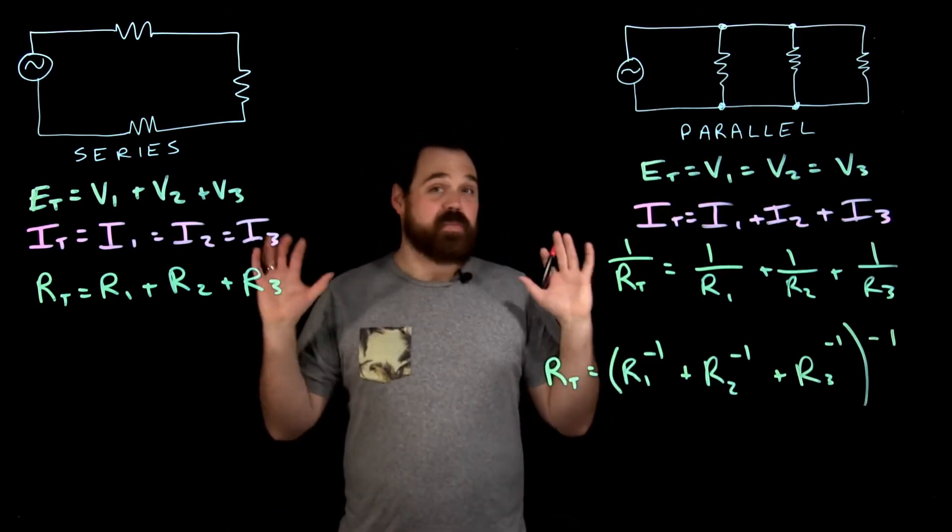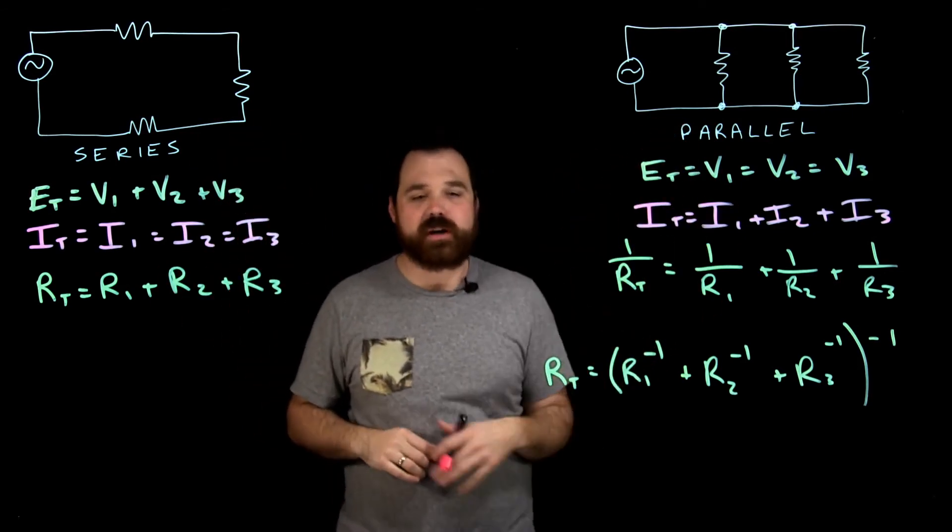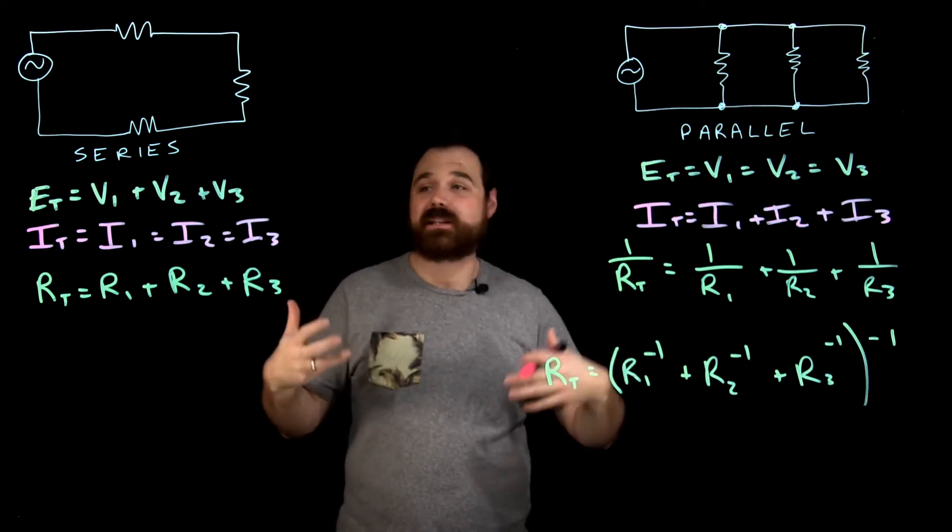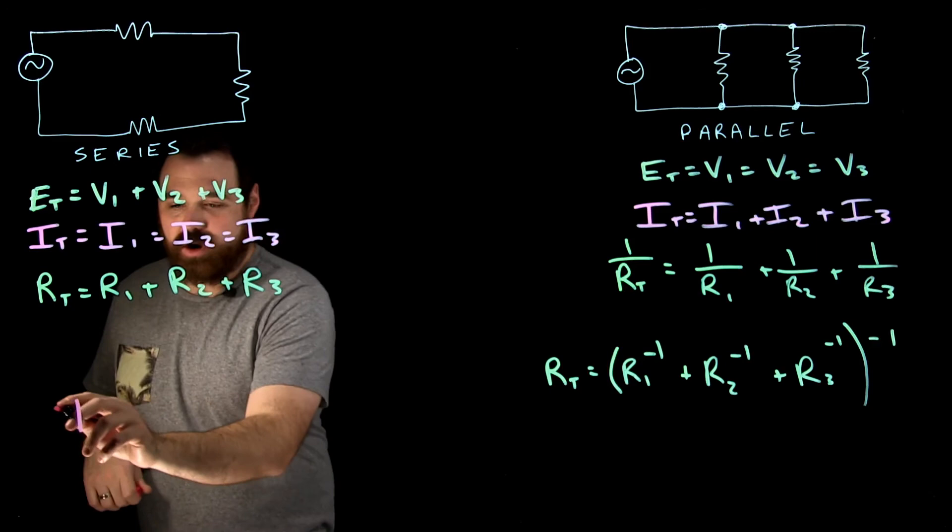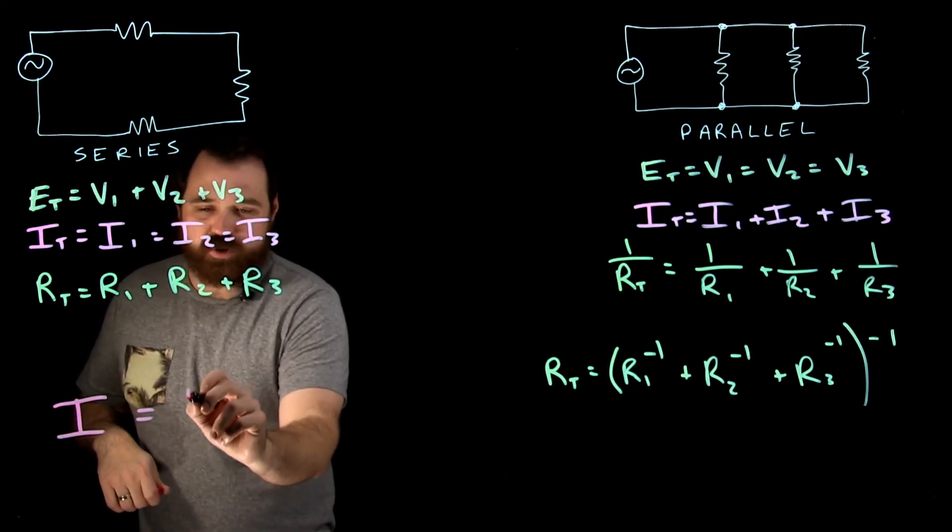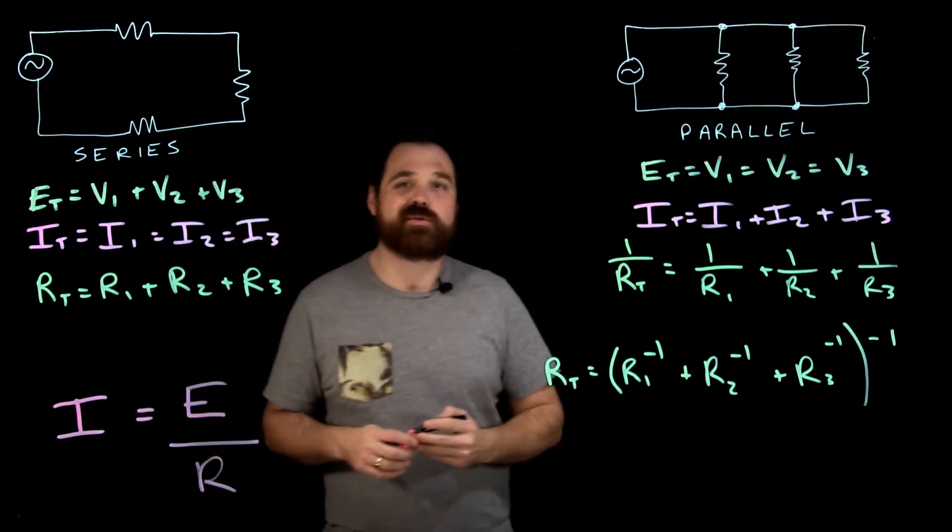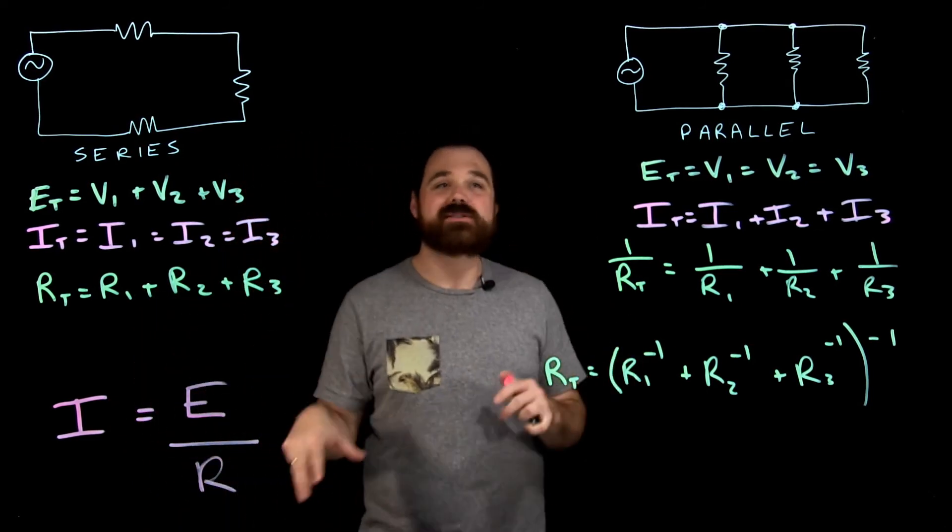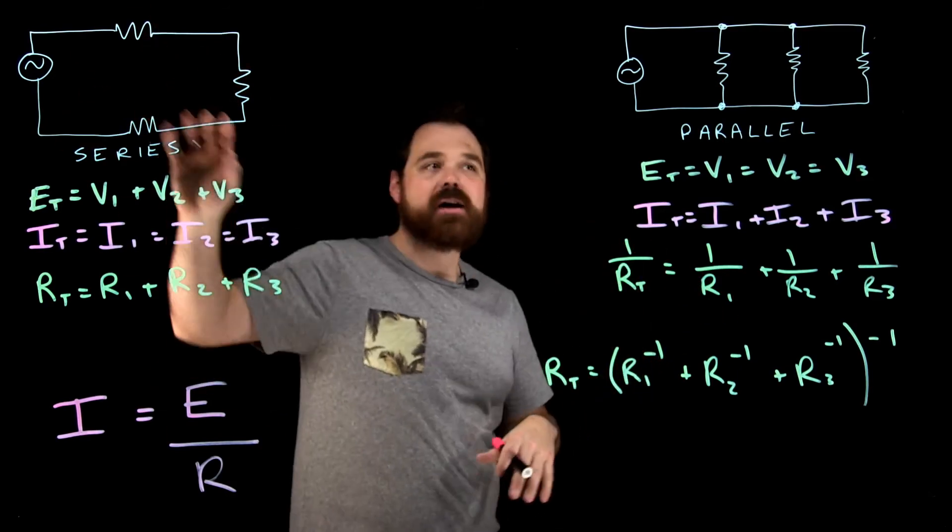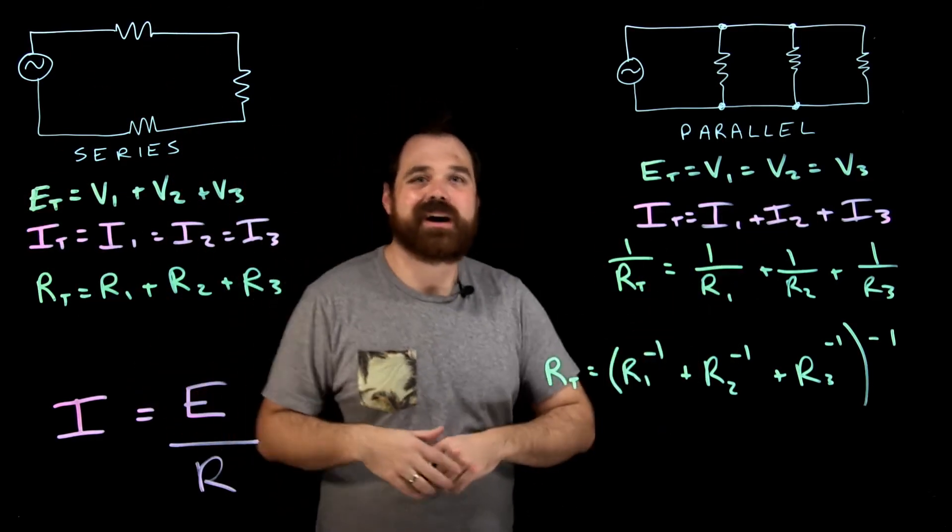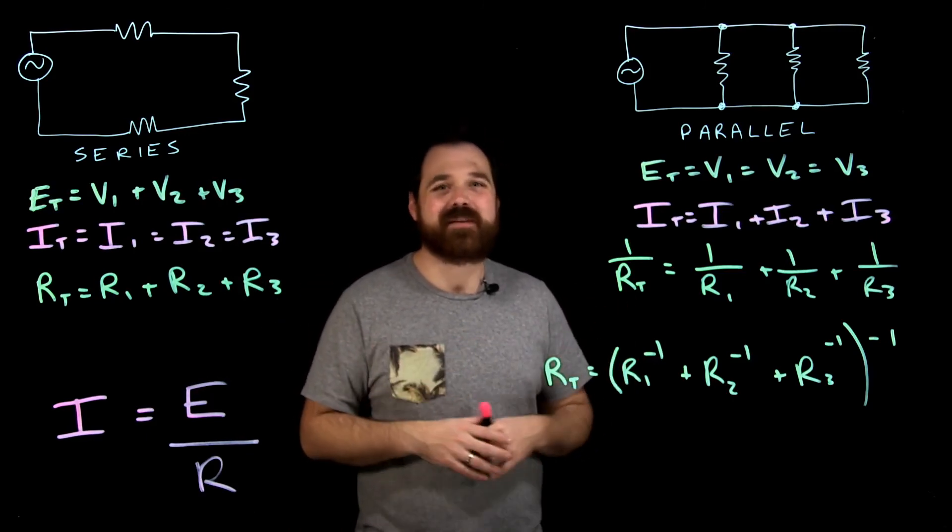Those are two basic formulas comparing purely resistive series and parallel circuits. Once we can calculate those and add up those totals, our favorite Ohm's law comes into play: current is directly proportional to voltage and inversely proportional to resistance. With those formulas, you should be able to calculate some basics using Ohm's law and our totals. I hope this helps. Thanks for watching and have a great day.